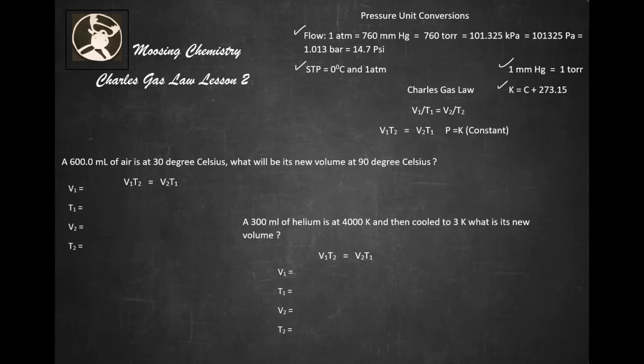Charles Gas Law is V1 over T1 equals V2 over T2, but the easiest way to do it is V1 T2 equals V2 T1 by rearranging variables. Remember that the pressure is the constant variable in Charles Law.